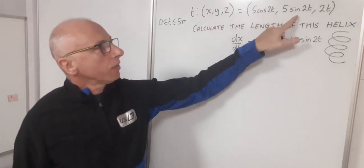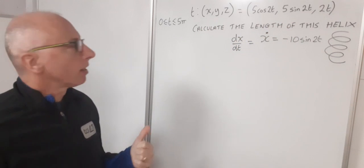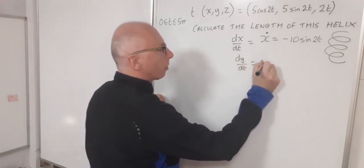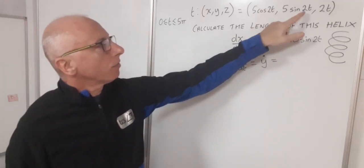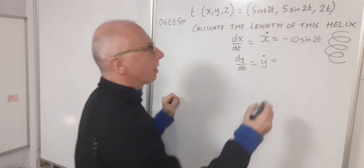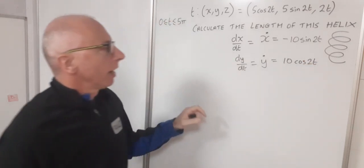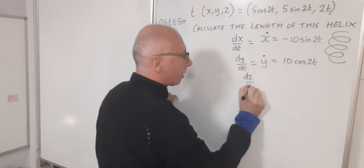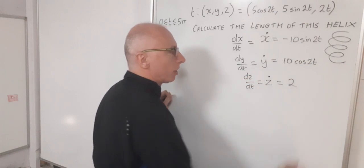Now this one here, Y is 5sin(2t). To take the derivative of that, we're looking for dy/dt. So we can write that as Y dot. Taking the chain rule, two times five is ten. And the derivative of sine is cosine. So we've got 10cos(2t). And then the derivative of this, same thing again, dz/dt. So we can write that as Z dot. The derivative of that, nice and straightforward, simply two.